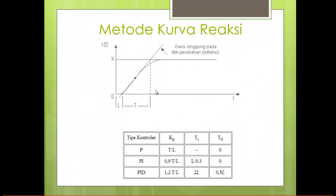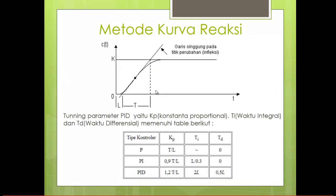Dengan mengetahui nilai parameter L (dead time) dan nilai T (waktu tunda), maka parameter-parameter dari controller Proporsional, Integral, dan Derivatif bisa dicari sebagaimana di dalam tabel. Untuk P, tinggal membandingkan nilai T dengan nilai L. Untuk PI dan PID juga dihitung berdasarkan tabel, misalnya dikalikan dengan faktor T/L. Dengan cara analisa eksperimental ini, parameter controller diperoleh tanpa harus mengetahui model matematis dari sebuah plant.